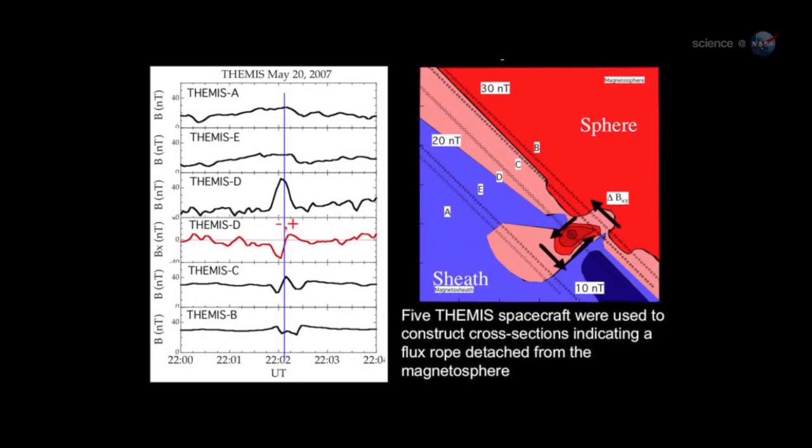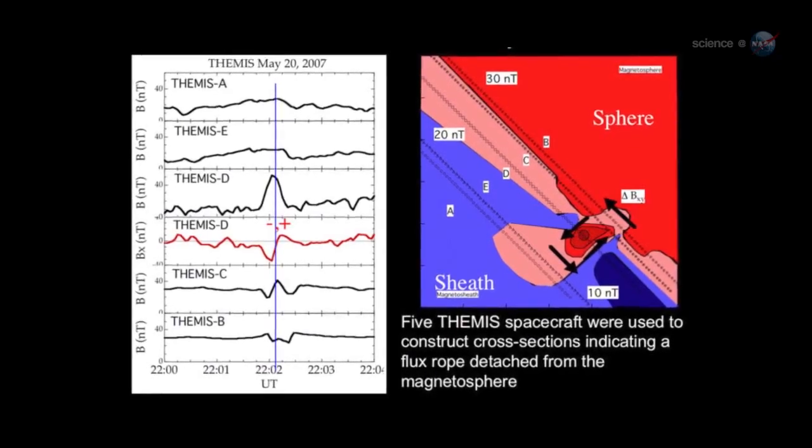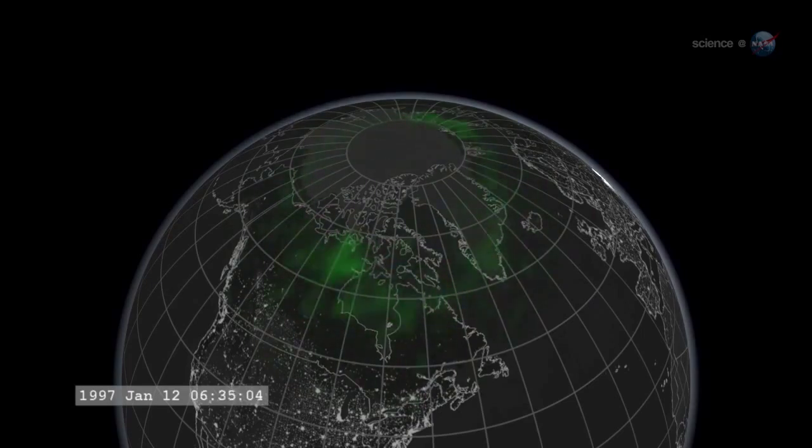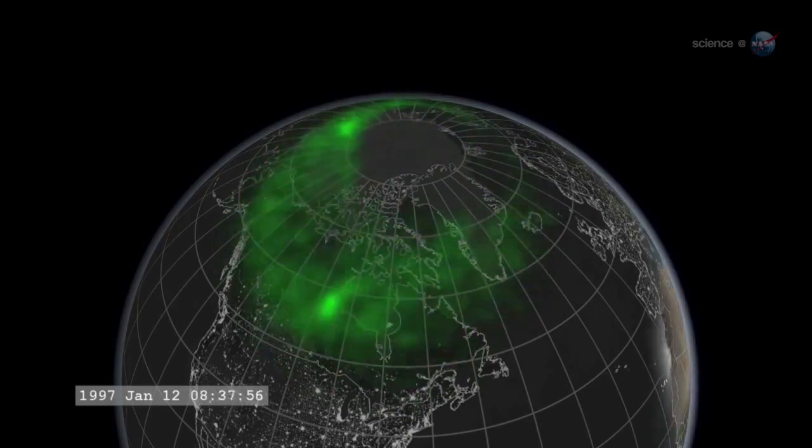Most portals are small and short-lived. Others are yawning, vast, and sustained. Energetic particles can flow through the openings, heating Earth's upper atmosphere, sparking geomagnetic storms, and igniting bright polar auroras.